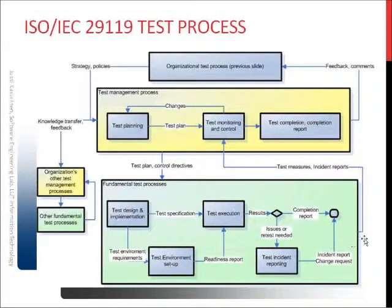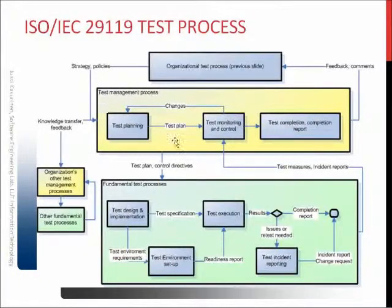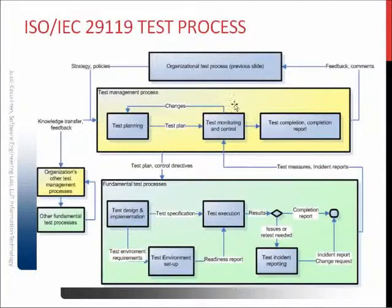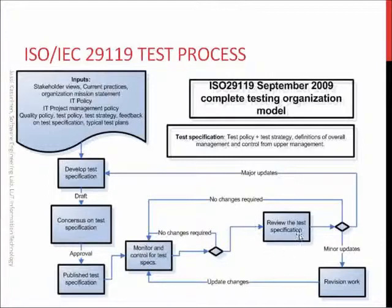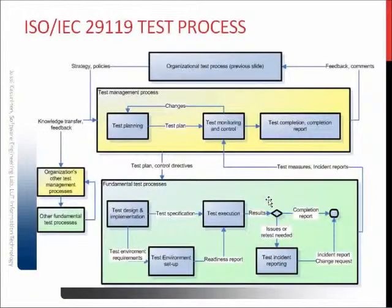It's worthwhile to know that the feedback loop connects all these layers together. The organizational level strategies and policies are given to test management and to all other projects in the organization. The strategy and policies are used to create a test plan, and the test plan gives the order on how to conduct testing. The fundamental test process provides results, which are monitored, controlled, and reviewed. When all the work is done, we create a test completion report, which is given as feedback to the organization. The organization can then review their test specification and see if they need minor updates, major updates, or no change.